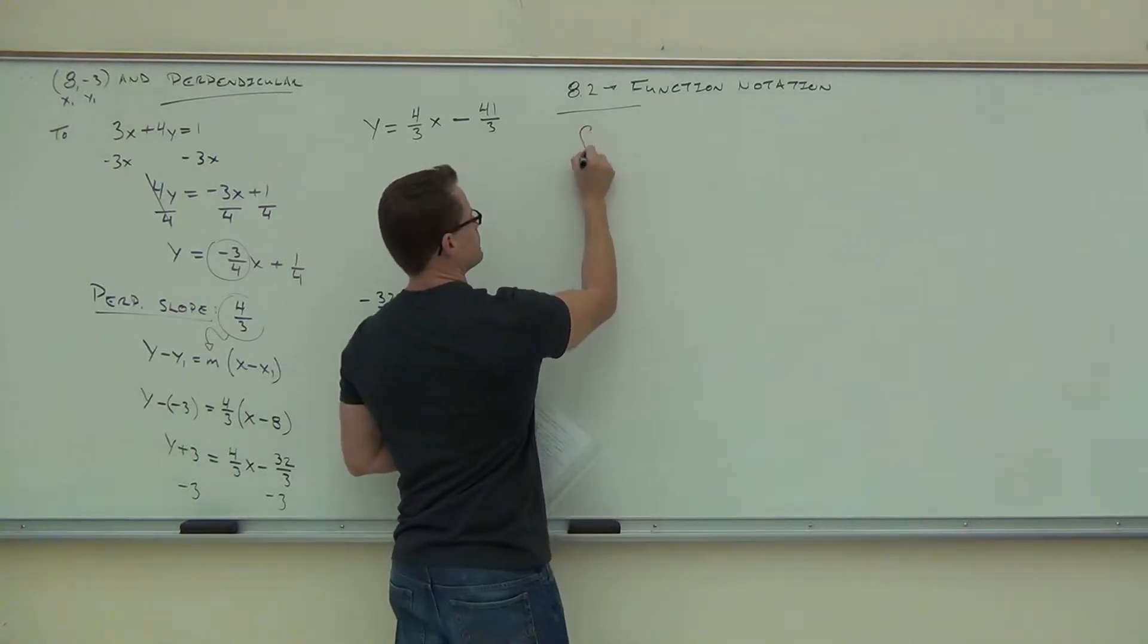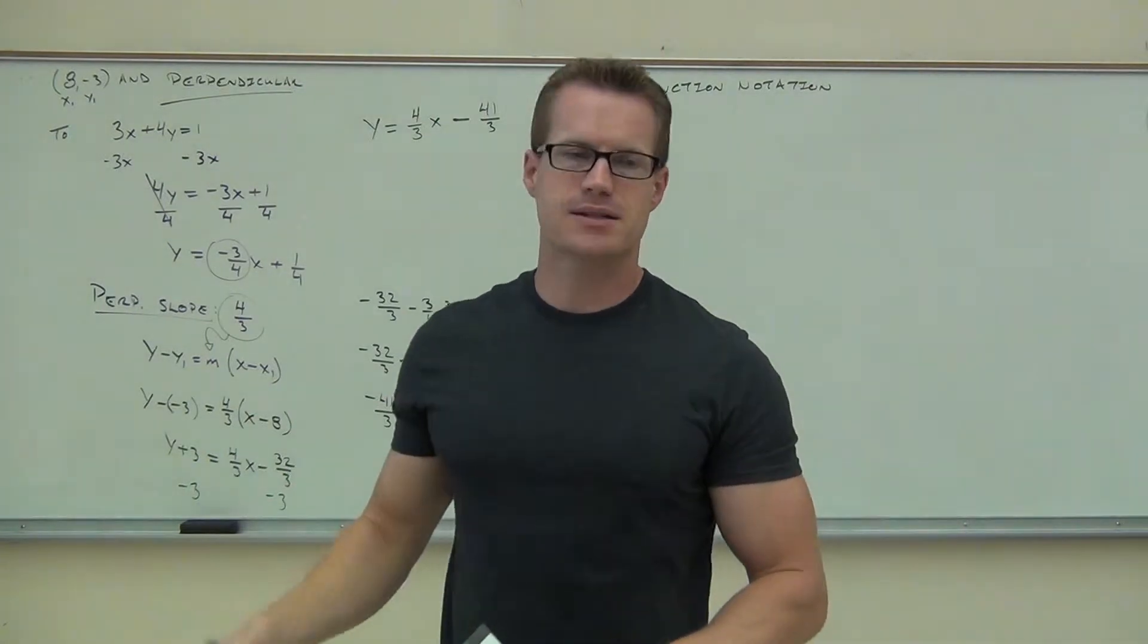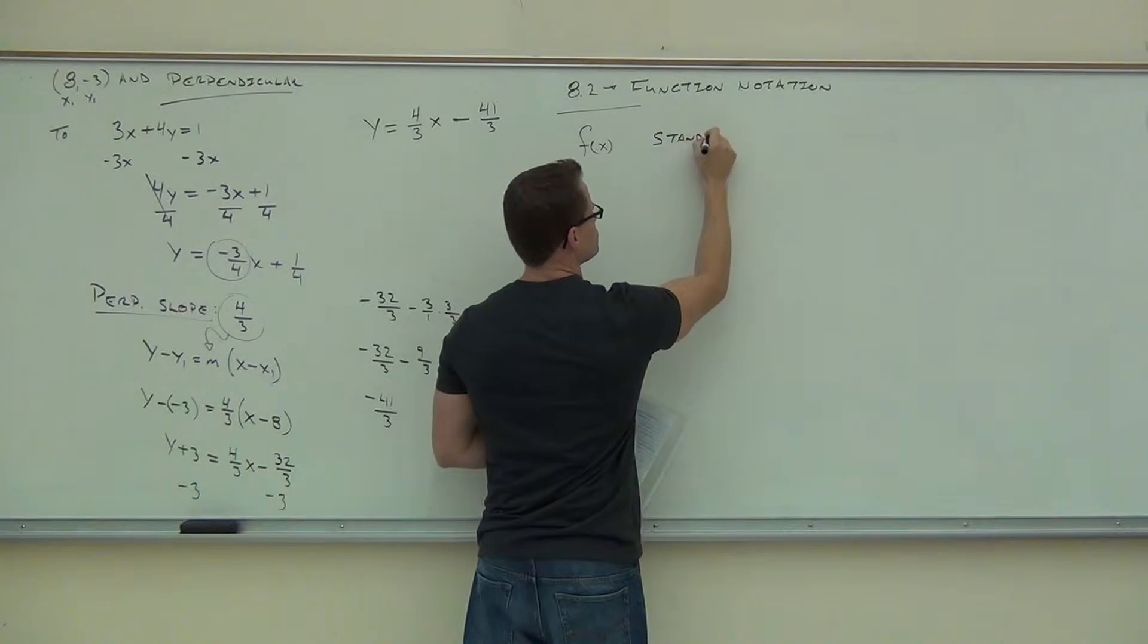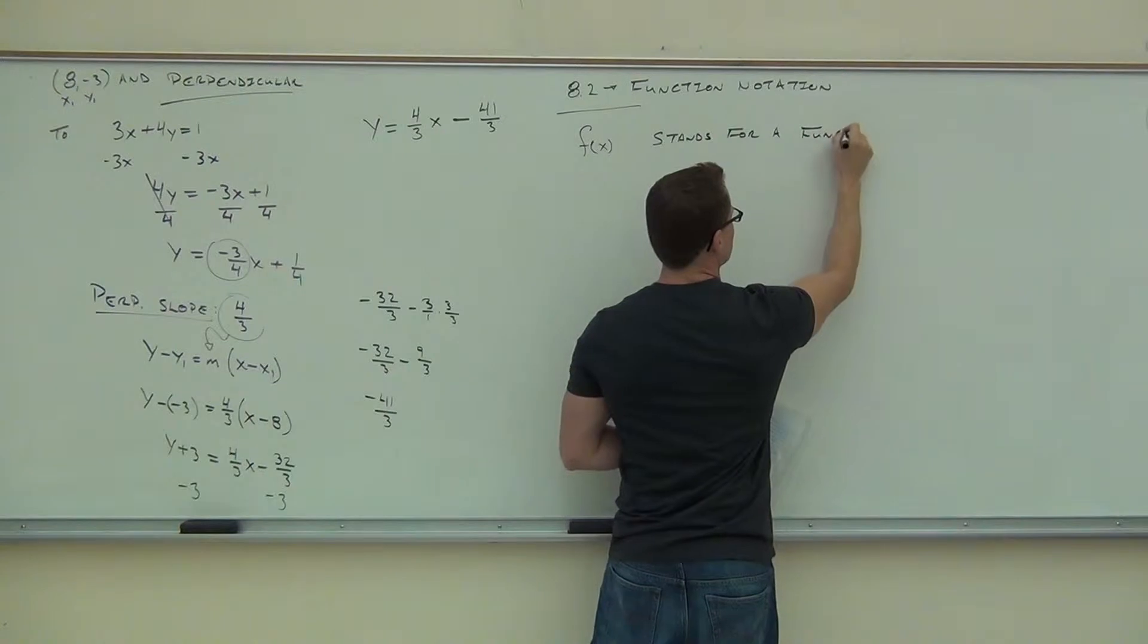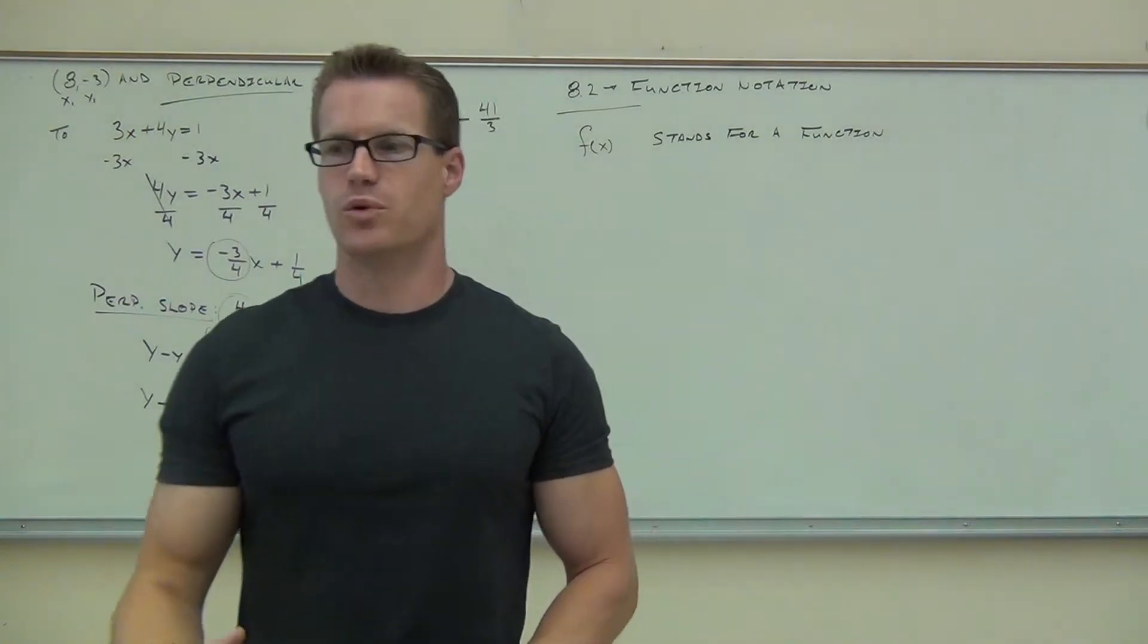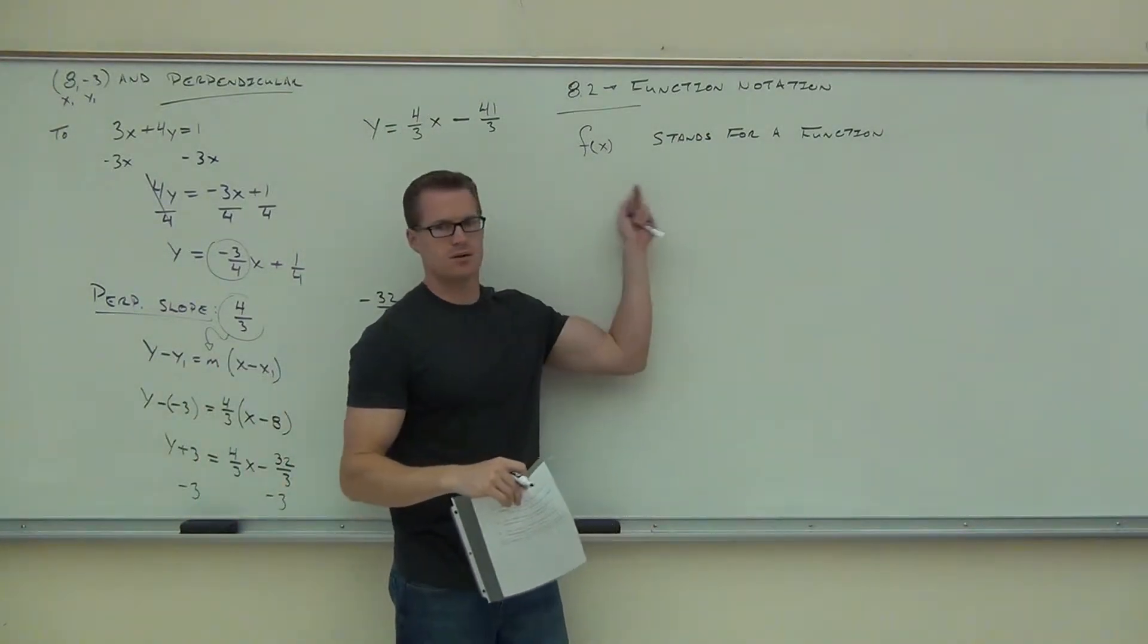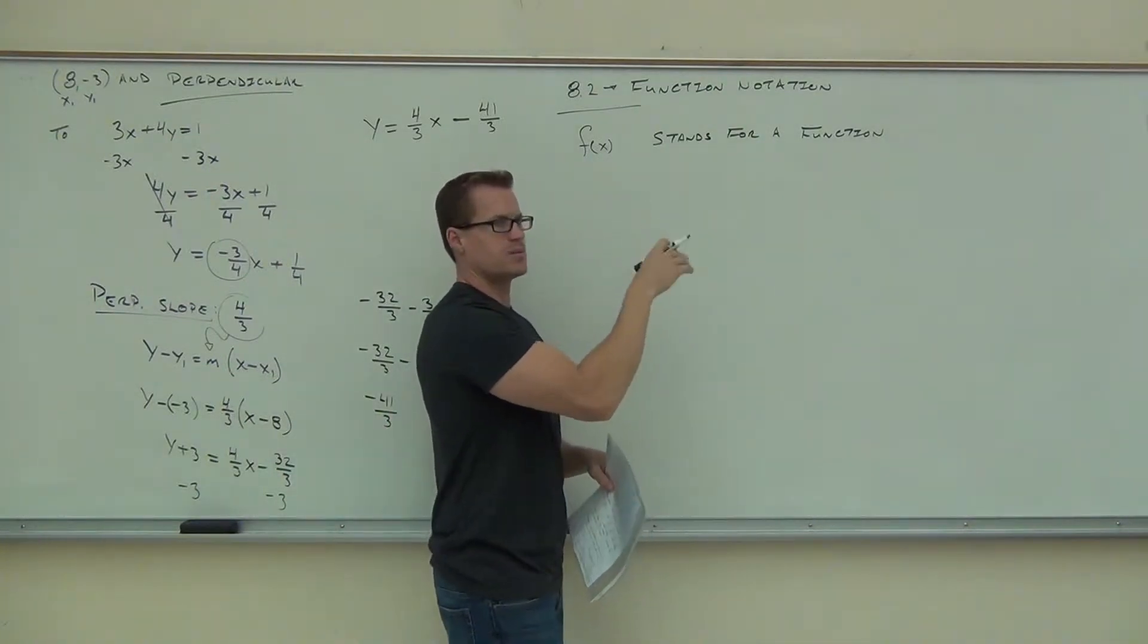This right here, when you see f of x, that's how you say that. When you see f of x, that's called function notation. And what this is, is this stands for a function whose independent variable - that's the variable you plug stuff into - whose independent variable is what? What's the variable up here? It's x. That's all this is saying. It's a function whose independent variable is x.